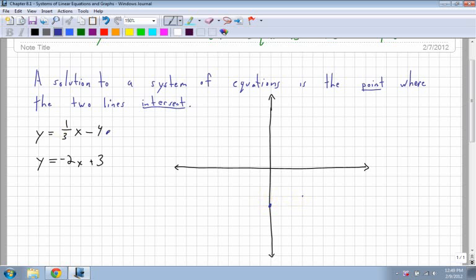so up 1 over 3, up 1 over 3, up 1 over 3. Or down 1 back 3, down 1 back 3, and down 1 back 3. You don't have to put that many points. That's a lot of points. Just enough that you can draw a straight line. Usually three points is fine.